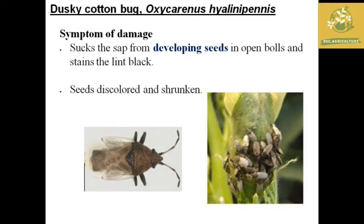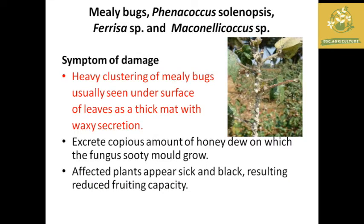The next pest is the dusky cotton bug, which looks similar to the red cotton bug but is dusky in color. Its scientific name is Oxycarenus hyalinipennis. The symptom of damage is sucking sap from developing seeds in open bolls, staining the lint black, and the seeds become discolored and shrunken.